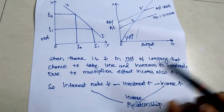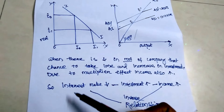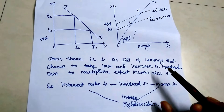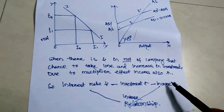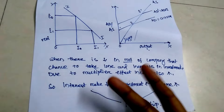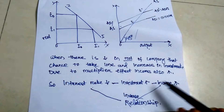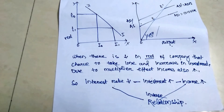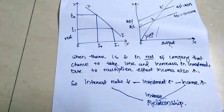Due to the multiplier effect, income also increases. So when interest rate decreases, investment increases, and therefore income increases. There is a negative or inverse relationship between interest rate and income — if interest rate decreases, income increases; if interest rate increases, income decreases.